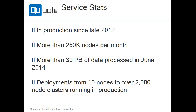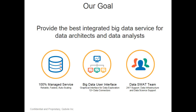Some quick stats: we've been in production since late 2012, currently at the scale of around 250,000 nodes every month, and processing close to 30 petabytes of data every month — growing rapidly. It was around 5 petabytes in January. We have deployments ranging from 10 nodes to 2,000-node clusters. Our goal is to provide 100% managed services. When an enterprise tries to set up big data infrastructure, there are many questions about cluster configuration, server types, and machine selection — that's where a lot of enterprises make mistakes. We solve that problem by providing a fully managed service where you just sign in and you're ready for big data analytics.